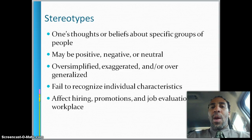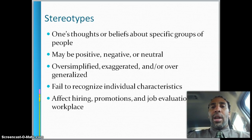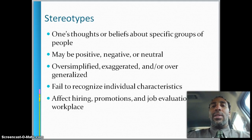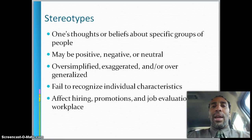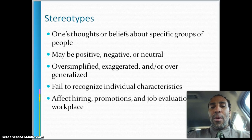Stereotypes are one's thoughts or beliefs about specific groups of people — they may be positive, negative, or neutral. For example, I thought that all African Americans could play basketball until I played against a team. I won't mention the high school because some of you may be alumni, but they were just terrible. I said, maybe they're sick, maybe they don't feel well today. But they really just couldn't play basketball — the fact is that everybody of any certain race can't play a certain sport.